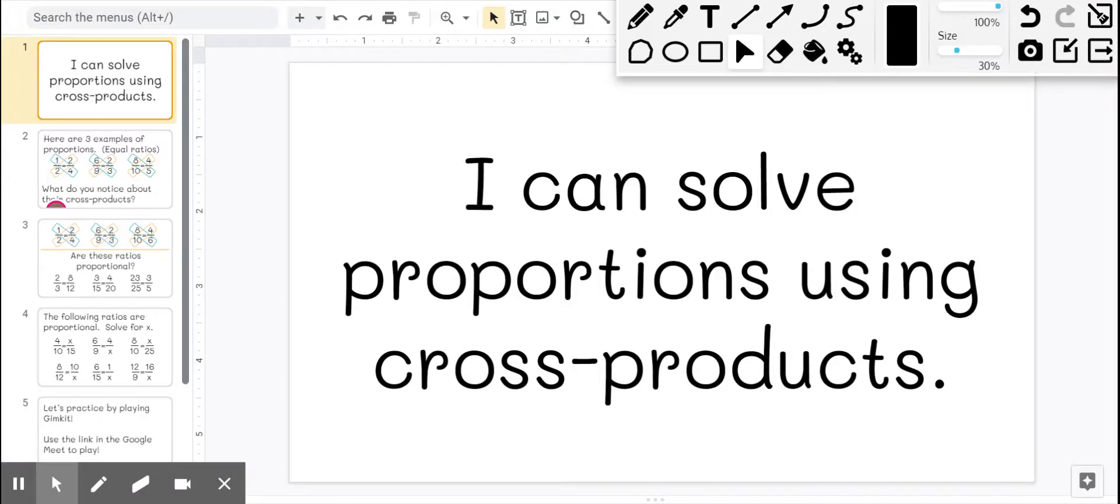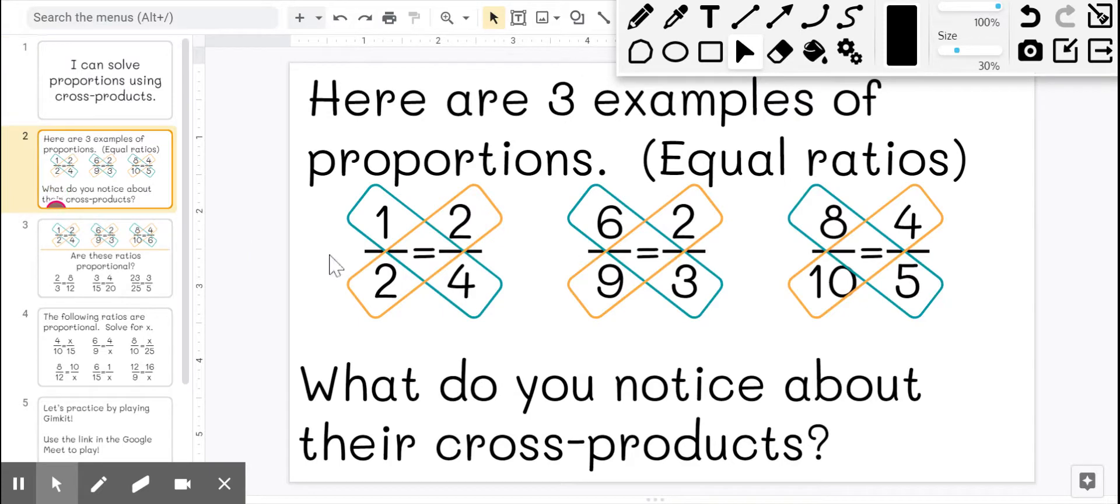I can solve proportions using cross products. Here are three examples of proportions which are equal ratios. So 1 to 2 is equal to 2 to 4.